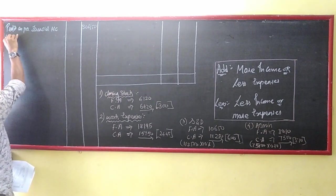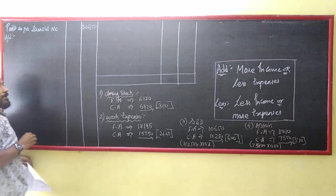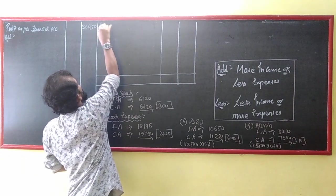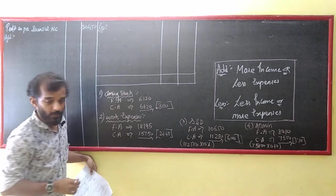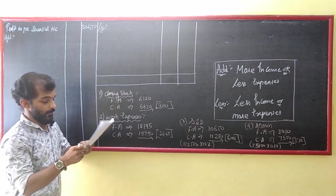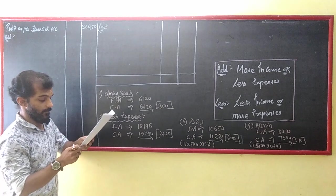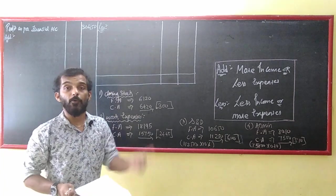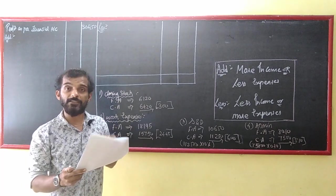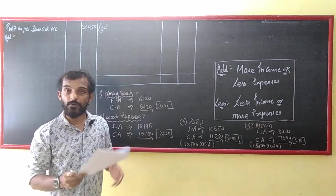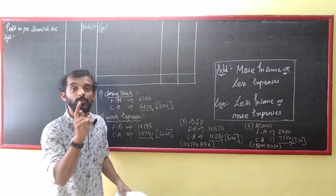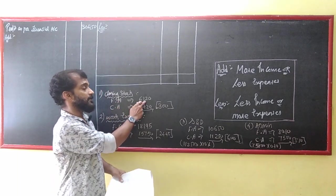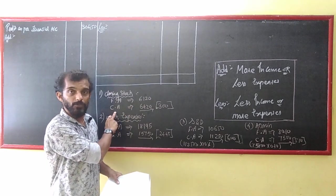In the reconciliation, we need to add some items and deduct others. First important point: closing stock in cost accounts is taken at 6,420, whereas in financial accounts it is 6,120. Closing stock is income. FA says 6,120, Cost says 6,420 — cost has more income.